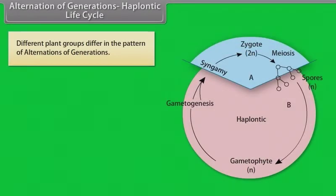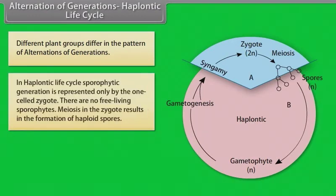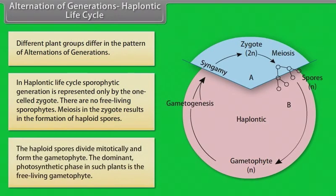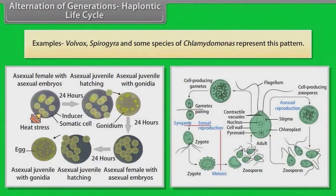Haplontic life cycle. Different plant groups differ in pattern of alternation of generations. In a haplontic life cycle, the sporophytic generation is represented only by the one-celled zygote — there are no free-living sporophytes. Meiosis in the zygote results in the formation of haploid spores. The haploid spores divide mitotically to form the gametophyte. The dominant photosynthetic phase in such plants is the free-living gametophyte. Examples: Volvox, Spirogyra and some species of Chlamydomonas represent this pattern.